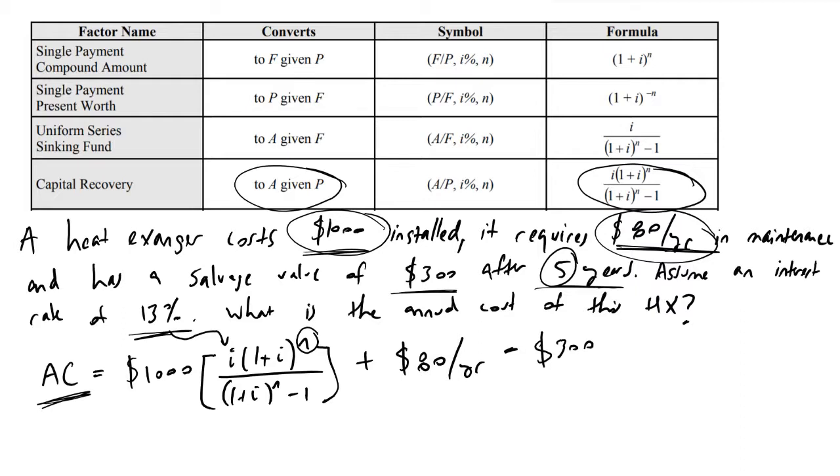So what we have to do in this case is convert this future value of $300 to an annual cost or an annual surplus. And so we're going to turn to this equation right here in which we're going to make use of our interest rate again, so we have 300 times i over 1 plus i raised to the n minus 1.